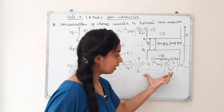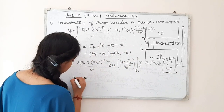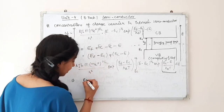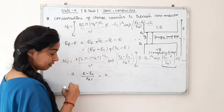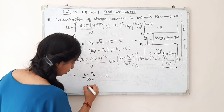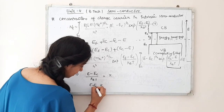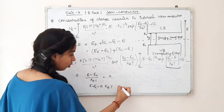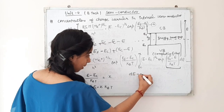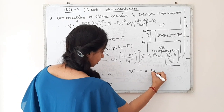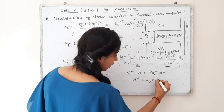To solve the remaining integration, we substitute: let x = (E − Ec) / kBT, so E − Ec = x·kBT. Taking the derivative of both sides, dE = kBT dx. When E = Ec, x = 0, and as E → ∞, x → ∞, so the limits change from Ec to ∞ into 0 to ∞. Using this substitution, the integral reduces to the standard gamma integral whose result is √π / 2.